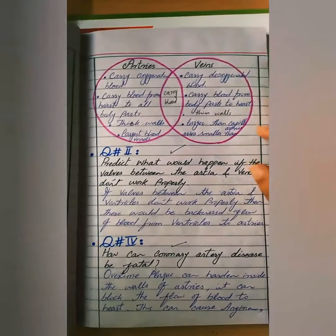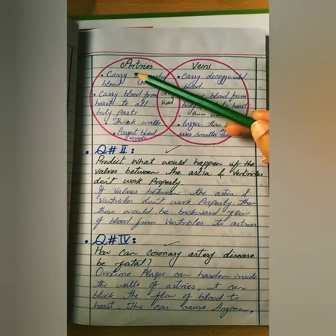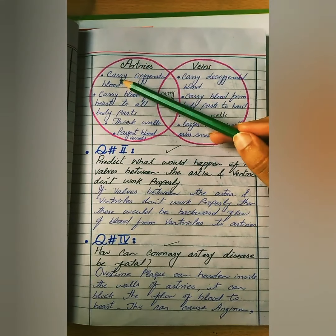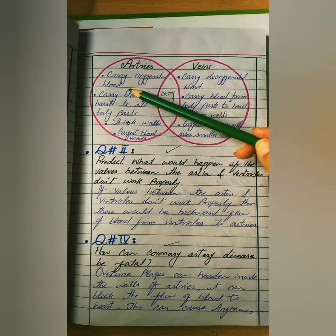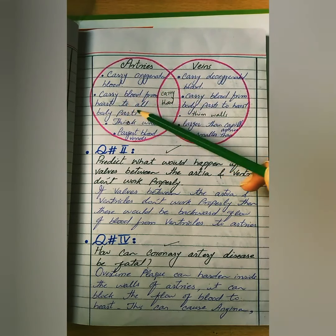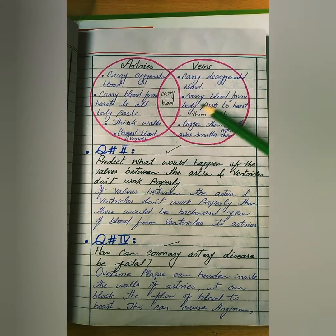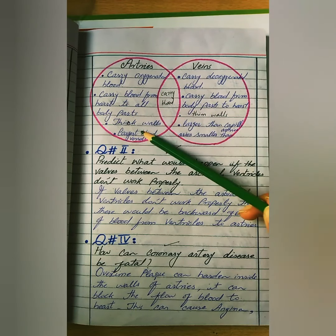The answer to this question is not directly in your chapter, so I have written it in my notebook — please note it from here or from the PDF. Draw two overlapping circles. For arteries: they carry oxygenated blood. For veins: they carry deoxygenated blood. Arteries carry blood from the heart to all body parts; veins carry blood from body parts back to the heart. These are the differences.